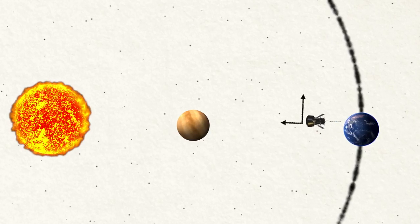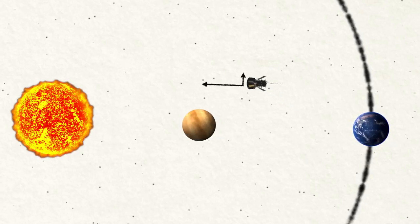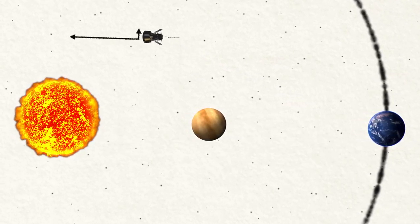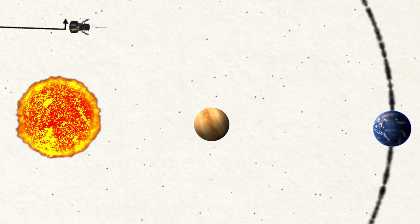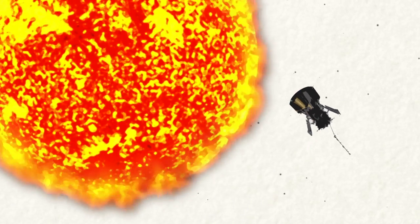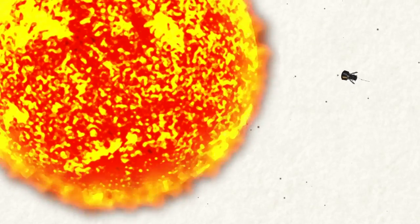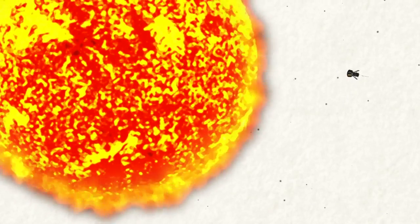When it finally does make its closest approach to the Sun, Parker Solar Probe will have lost much of its sideways speed, but gained a great deal of overall speed thanks to the Sun's gravity. Parker Solar Probe will hurtle past the Sun at 430,000 miles an hour, the very first human-made object to get that close.